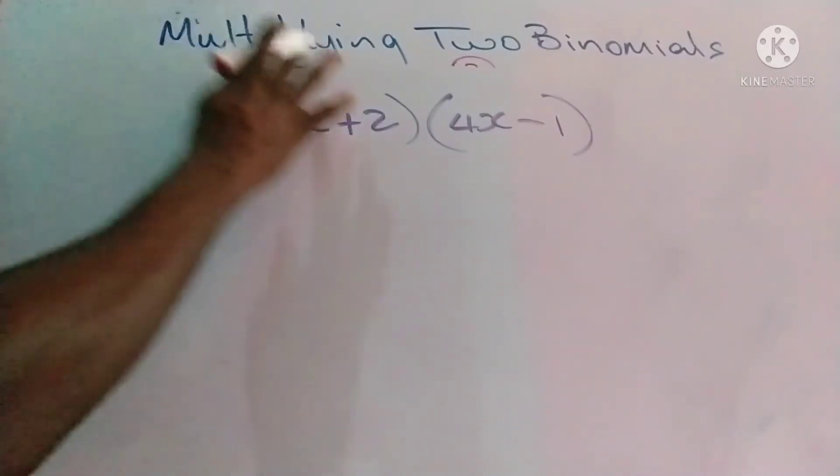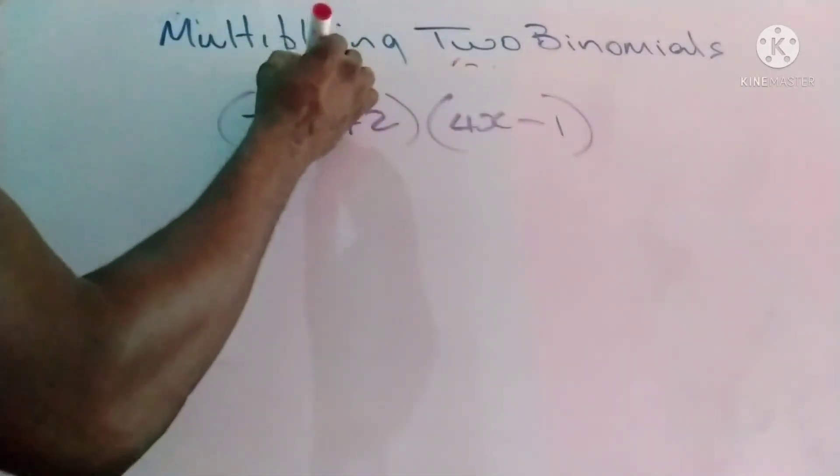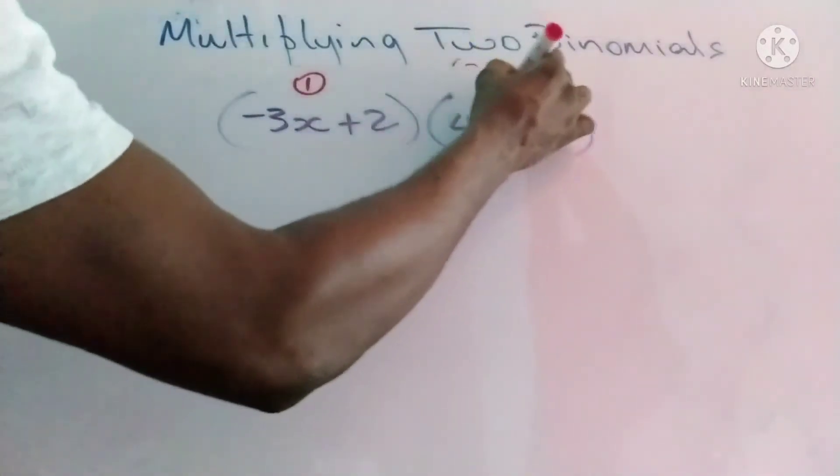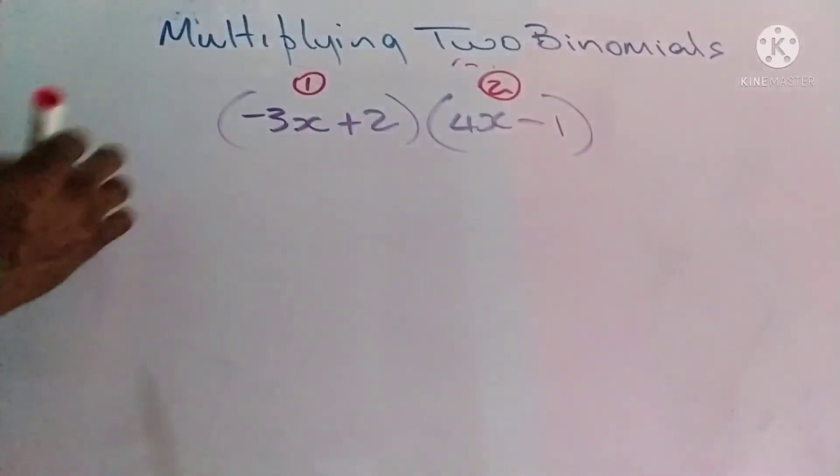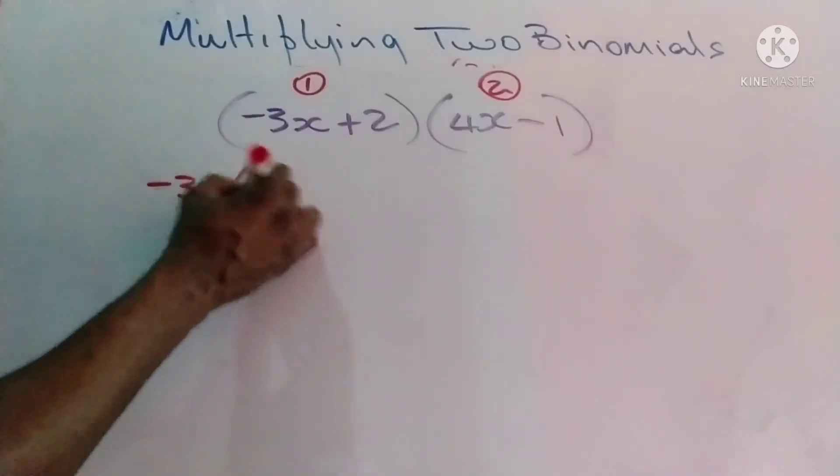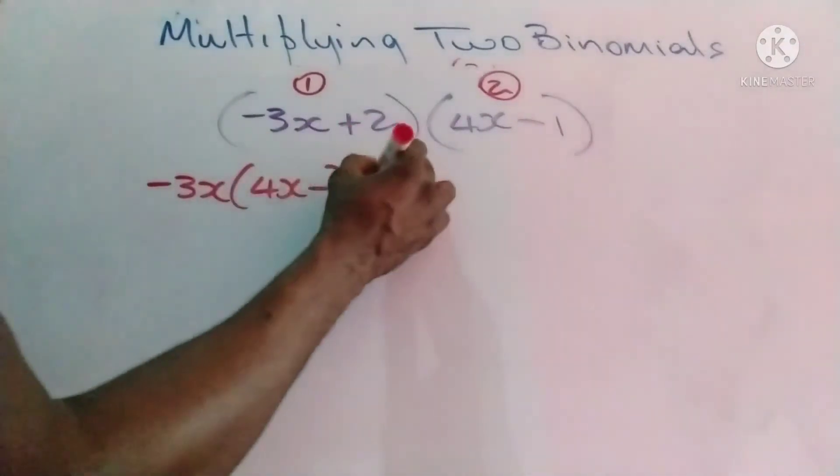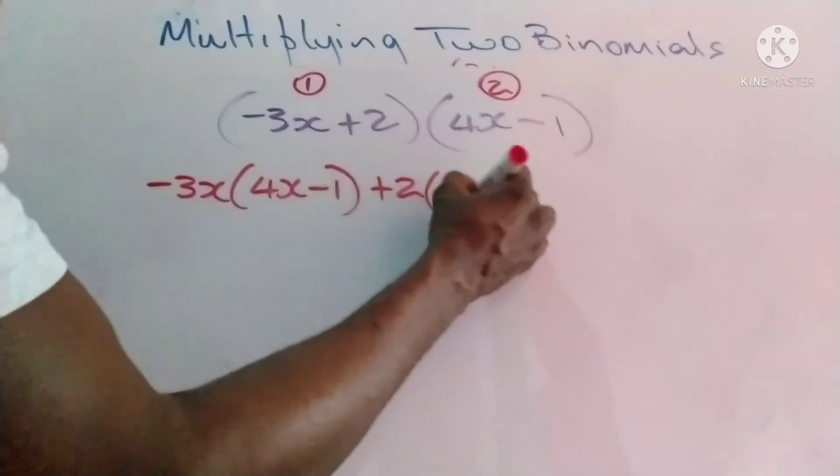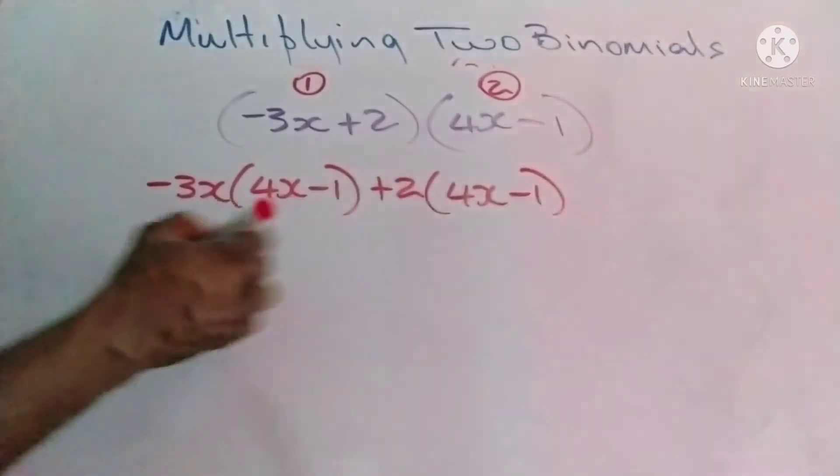Again, the principle remains the same. Every element from the first bracket must multiply by every element in the second bracket. Let's isolate them. Negative 3x will go with (4x - 1). Positive 2 will go with (4x - 1) as well.